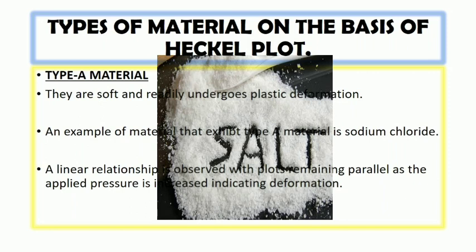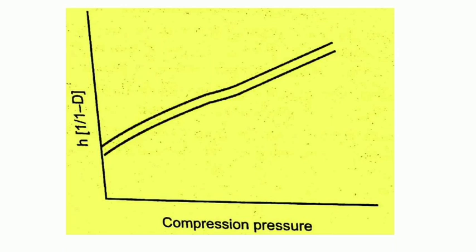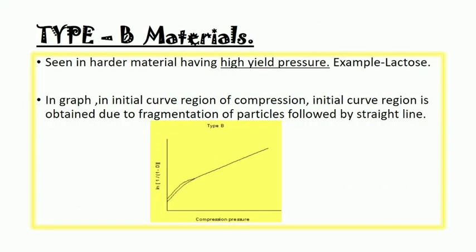They are actually soft, so when we apply the pressure, deformation is easily done. That's why a straight line is obtained between log 1 over 1 minus D and compression pressure. What are type B materials? They are the harder materials. They have high yield pressure. Example of this material is lactose.